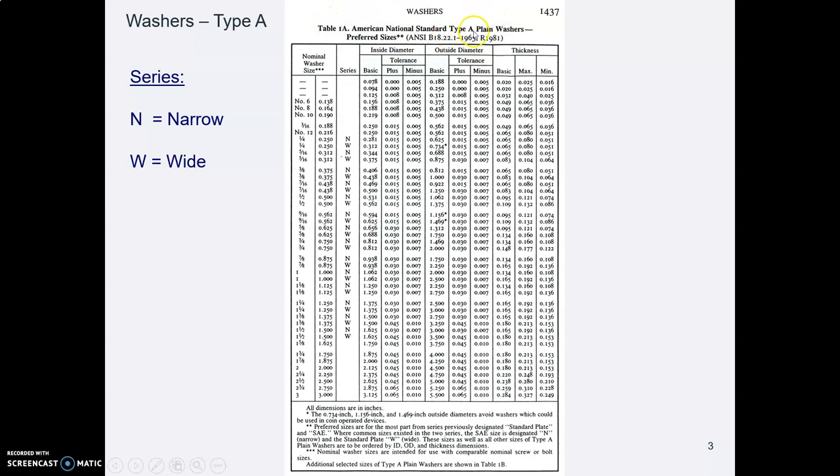So this is about standard plain washers type A. We don't know yet what type A is, but that's okay. We might want to look at the material down here in the footer to see if there's anything in there we need to know about. And then we notice, okay, along the side it gives the nominal size.